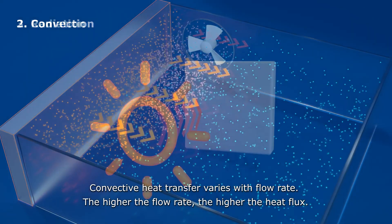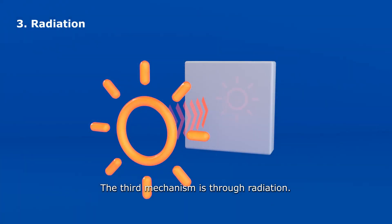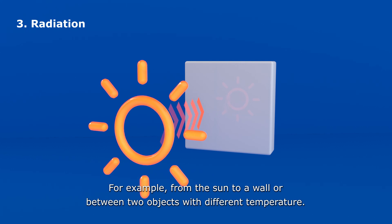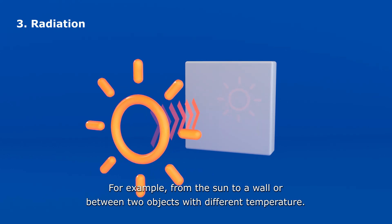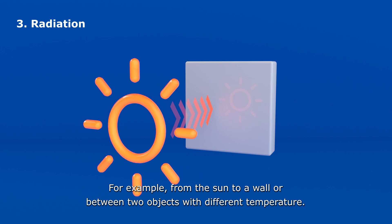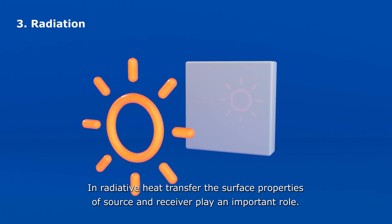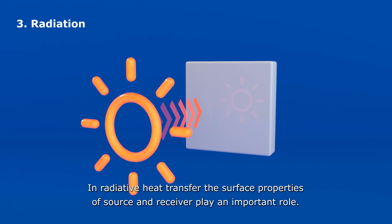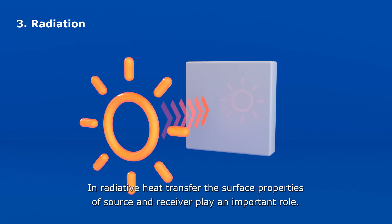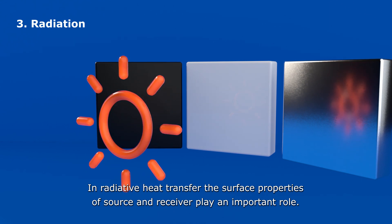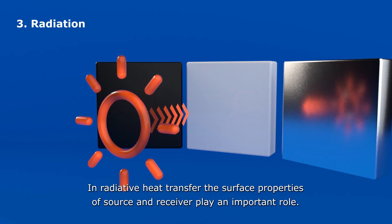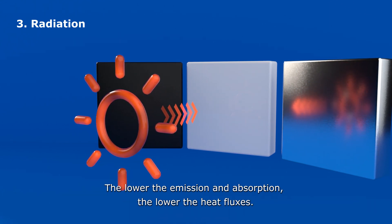The third mechanism is through radiation — for example, from the Sun to a wall, or between two objects with different temperatures. In radiative heat transfer, the surface properties of the source and receiver play an important role.